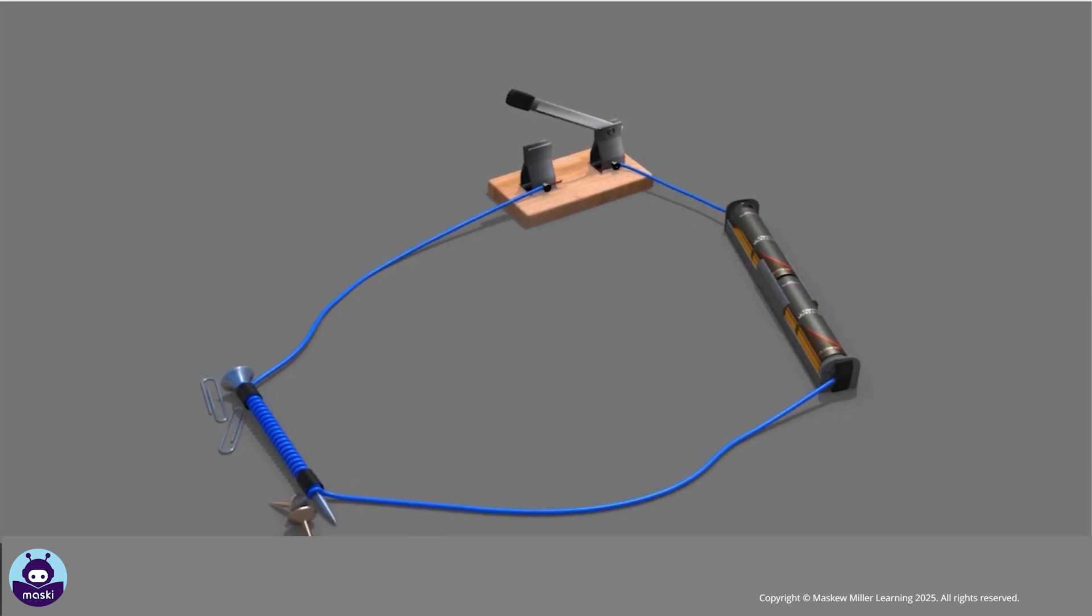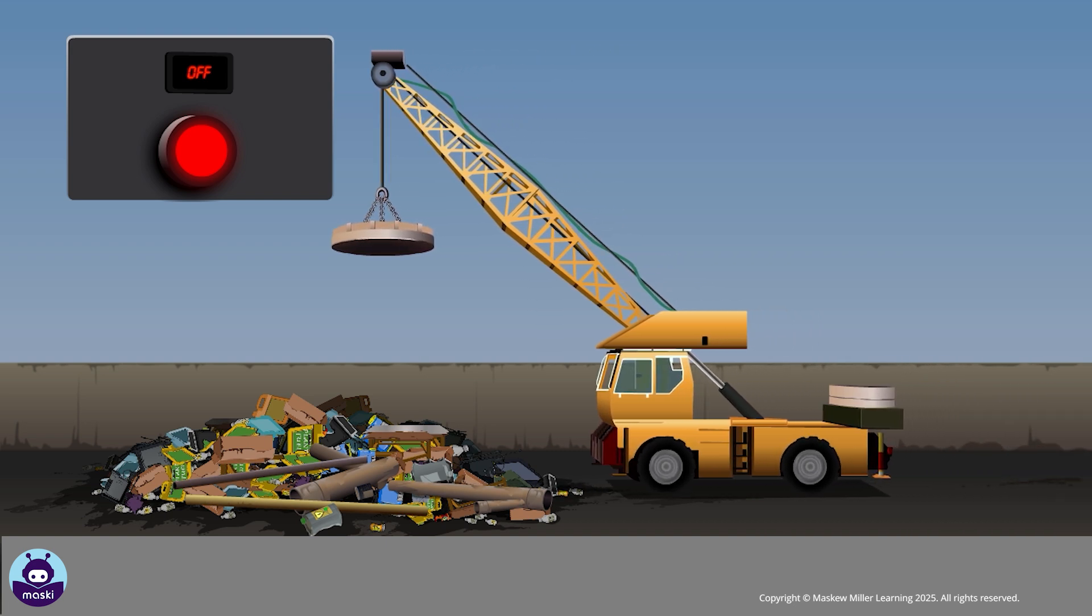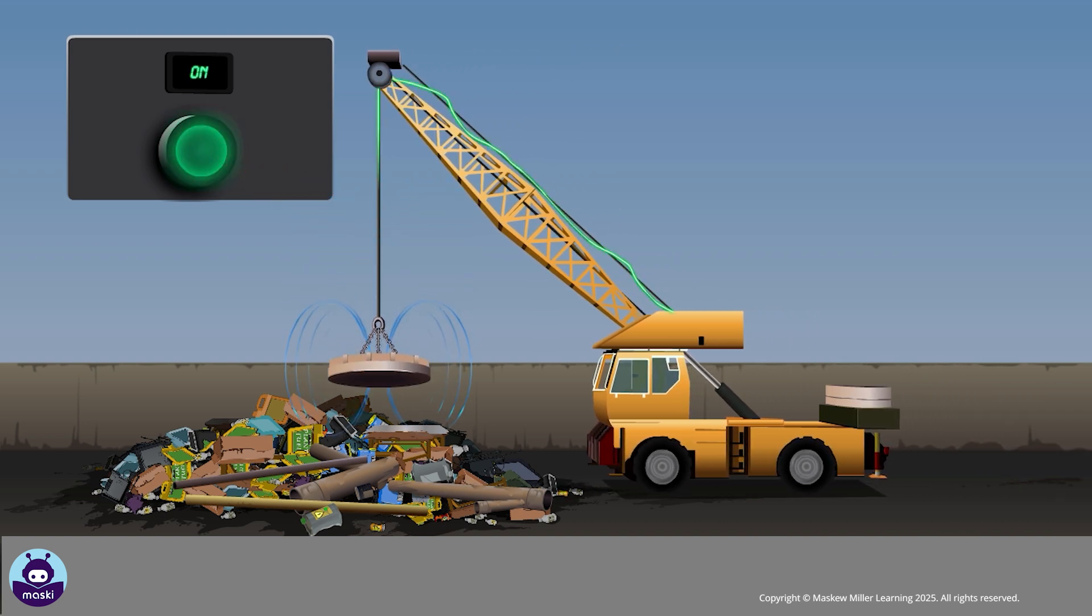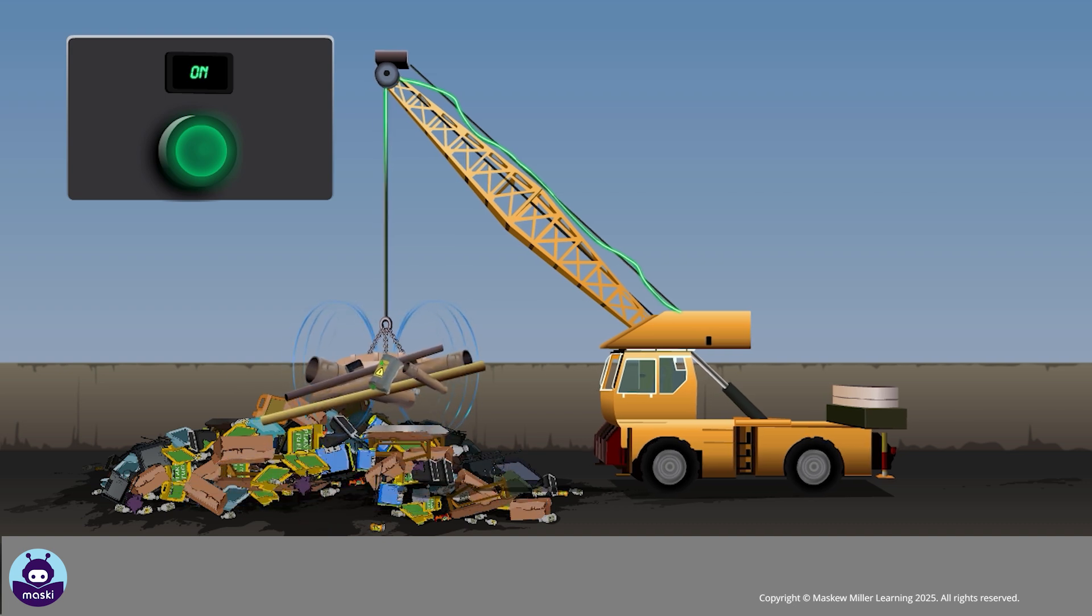Electromagnets are used in a recycling facility. When a switch is turned on, an electric current flows in the large flat magnetic lift. The lift attracts metallic objects such as iron and steel scrap.